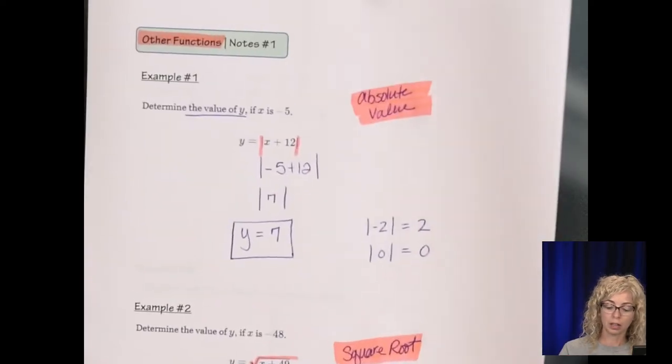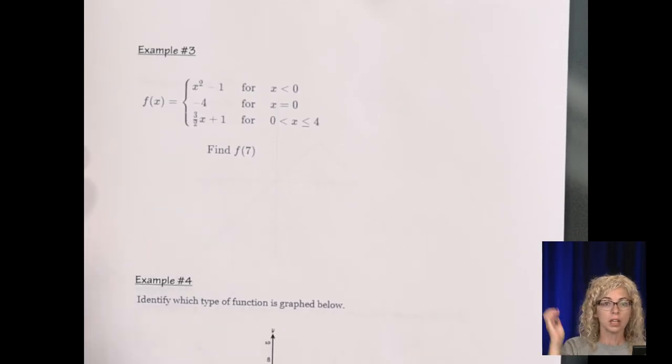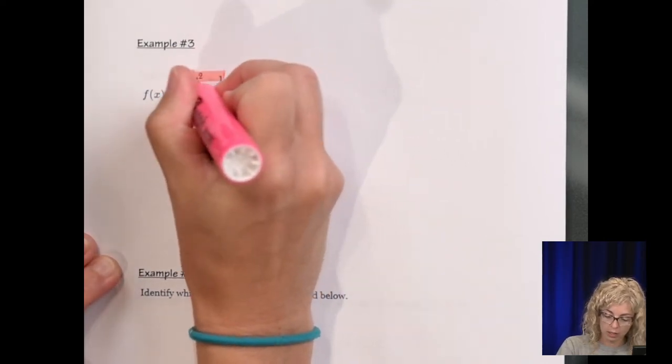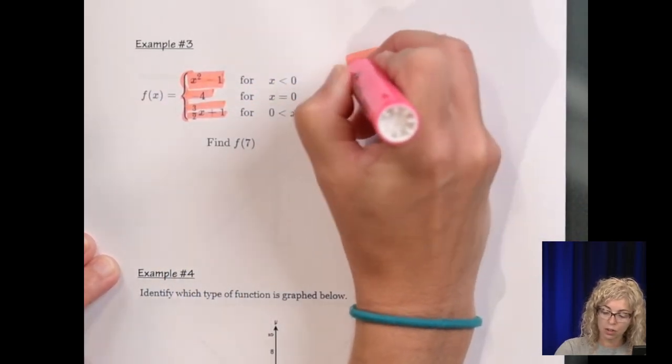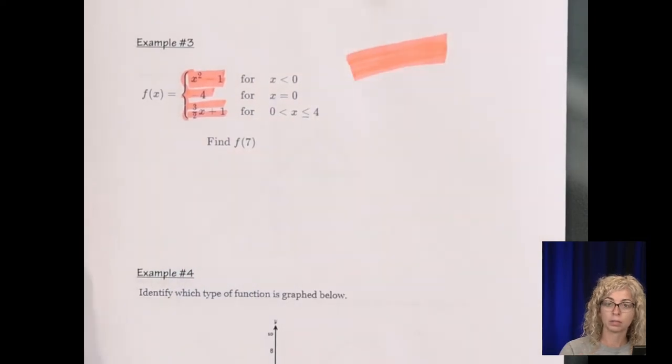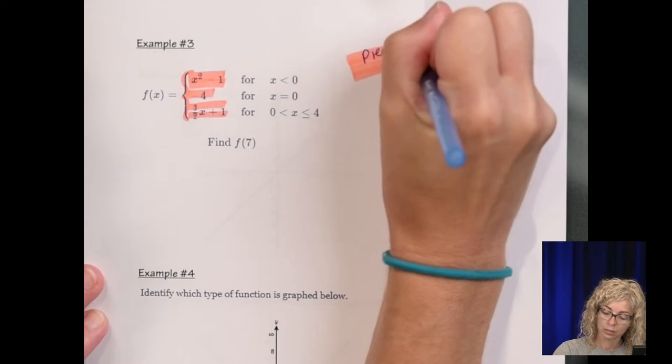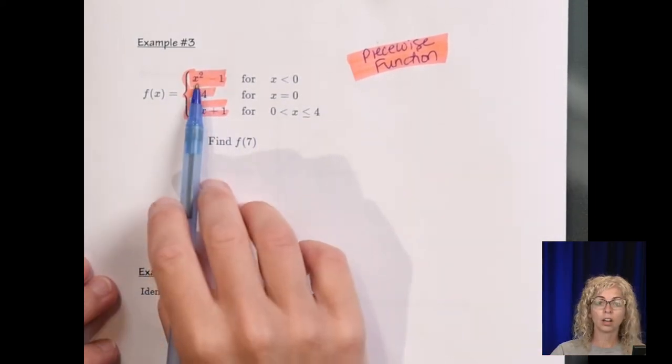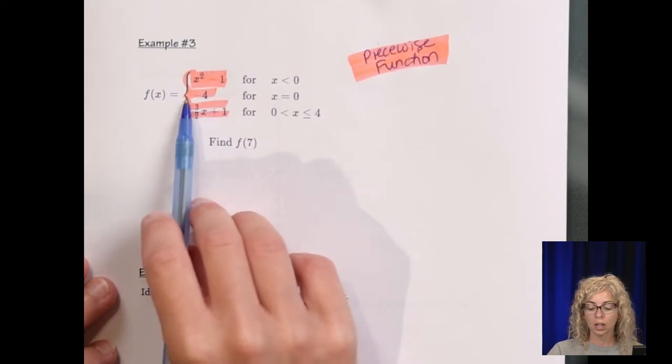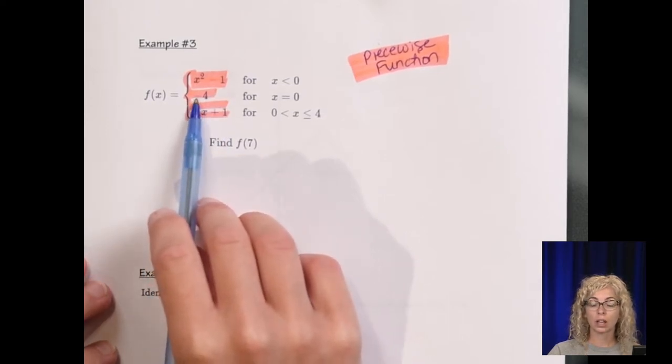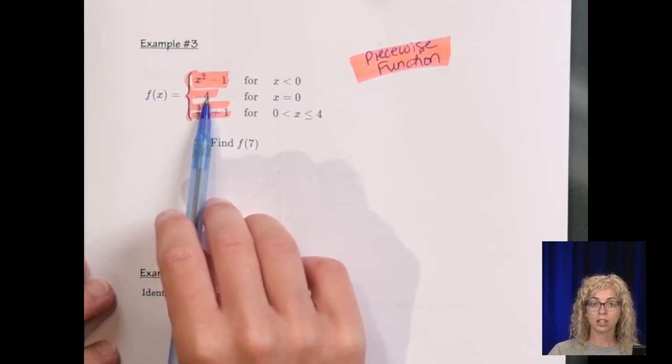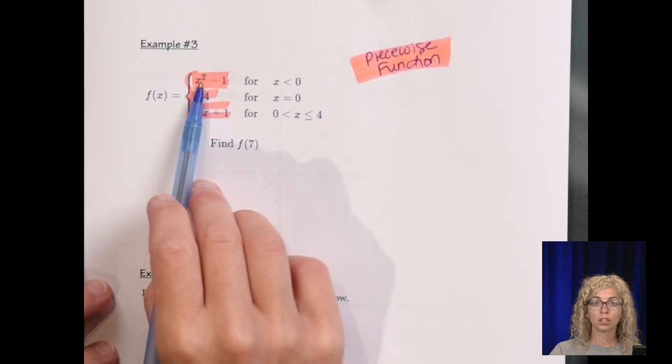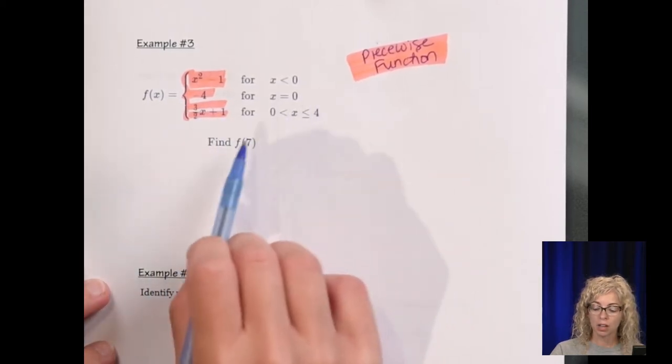Moving on to example 3. When we see this bracket with all of these pieces, there's three pieces, this is called a piecewise function. Now we have the piecewise function consisted of a quadratic. x squared minus 1 is a quadratic expression. f of x equals negative 4 is a straight line. Every y value is negative 4, so that creates a horizontal line. And then 3 halves x plus 1 is linear. So we have one quadratic function and two linear functions that make up the piecewise.